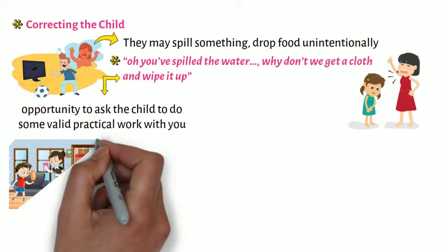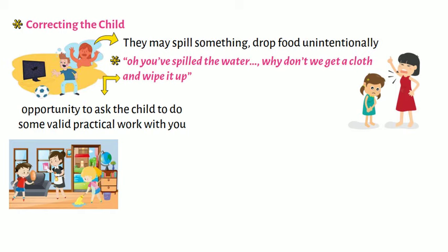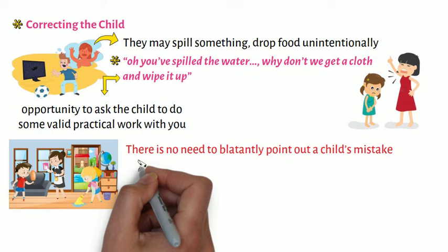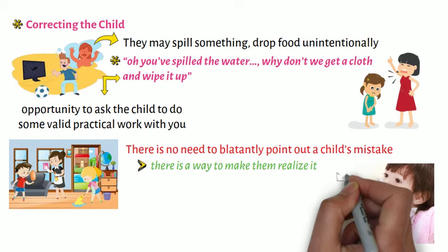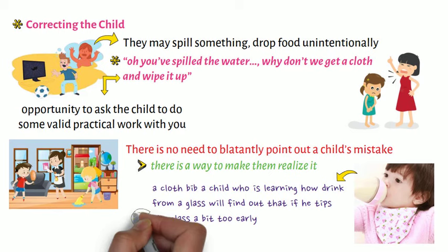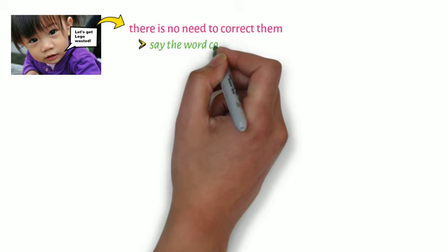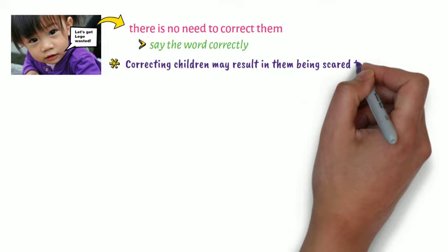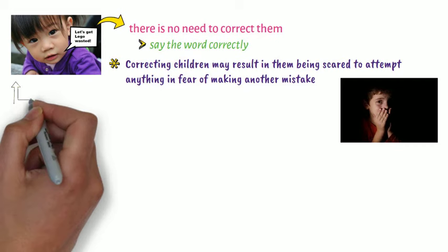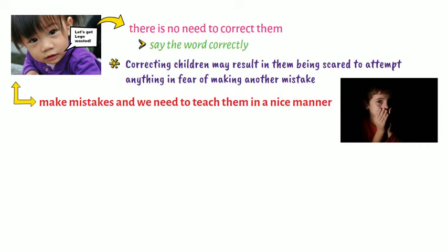You will find that children do like to clean up, as they see it as something adults do. There is no need to blatantly point out a child's mistake; there is a way to make them realize it. For example, with a cloth bib, a child who is learning how to drink from a glass will find out that if he tips the glass a bit too early, the water will spill on him and he will feel it. If they mispronounce a word, there is no need to correct them, but rather say the word correctly. Correcting children may result in them being scared to attempt anything in fear of making another mistake. Children will make mistakes and we need to teach them in a nice manner.